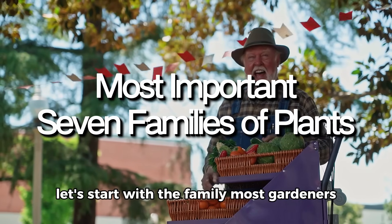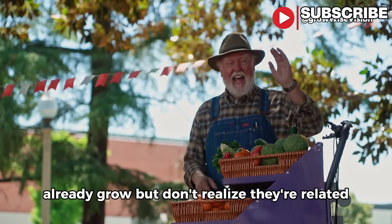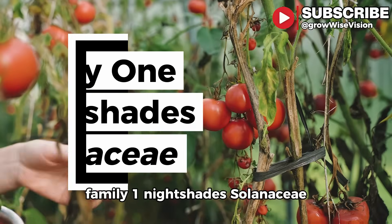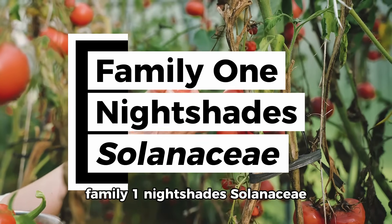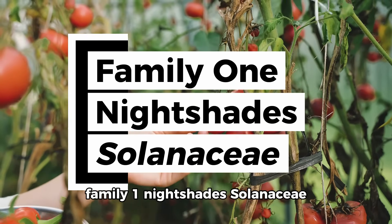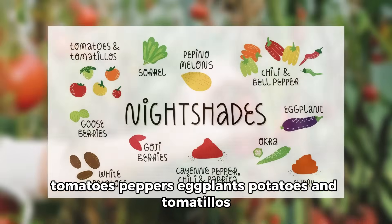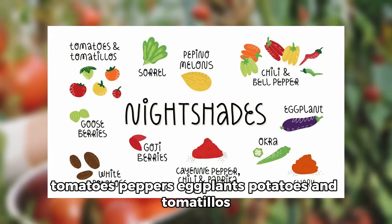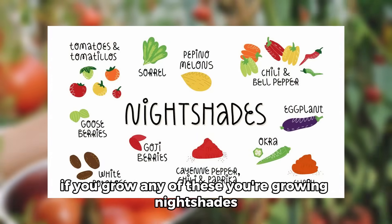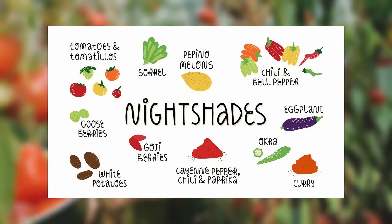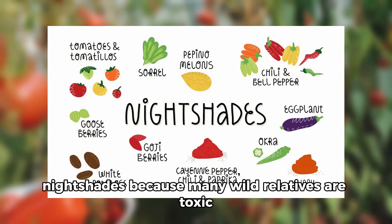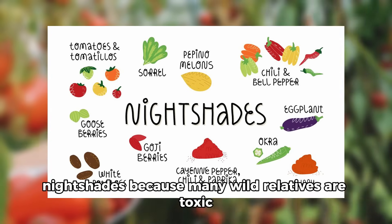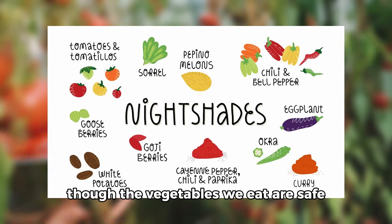Let's start with the family most gardeners already grow but don't realize they're related. Family 1: Nightshades (Solanaceae) — tomatoes, peppers, eggplants, potatoes, and tomatillos. If you grow any of these, you're growing nightshades. They're called nightshades because many wild relatives are toxic, though the vegetables we eat are safe.